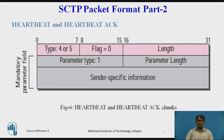Heartbeat and Heartbeat ACK: The Heartbeat chunk and the Heartbeat ACK chunk are similar except for the type field. The first has a type of 4 and the second a type of 5. The figure shows the format of these chunks. These two chunks are used to periodically probe the condition of an association. An endpoint sends a heartbeat chunk and the pair responds with the heartbeat ACK if it is alive. The format has three common fields and mandatory parameter fields that provide sender-specific information, including the local time and the address of the sender. This information is copied without change into the heartbeat ACK chunk.